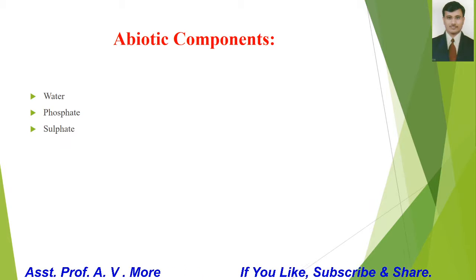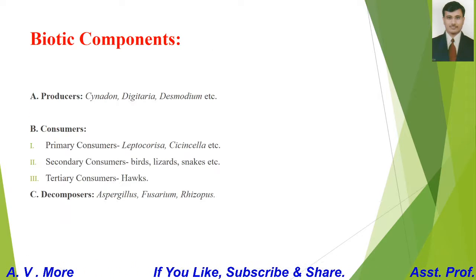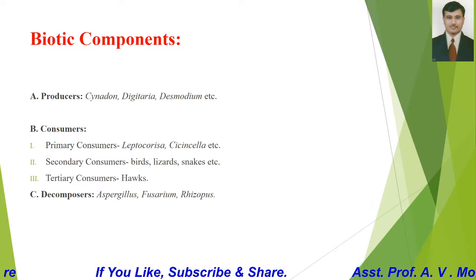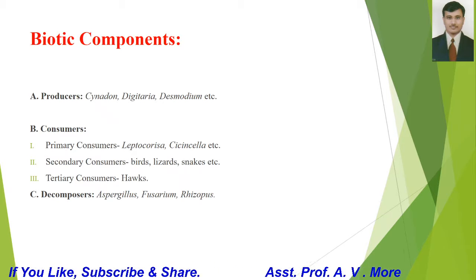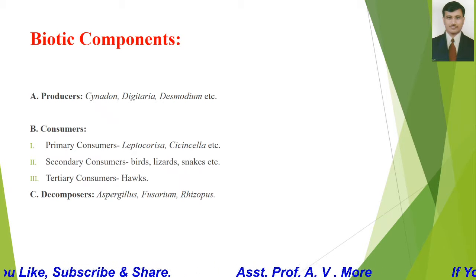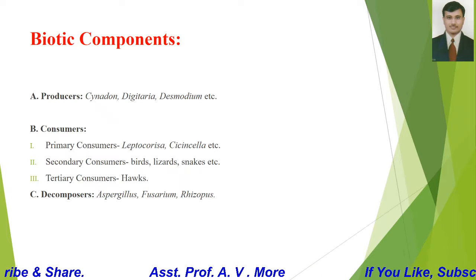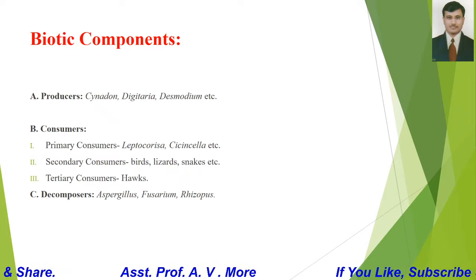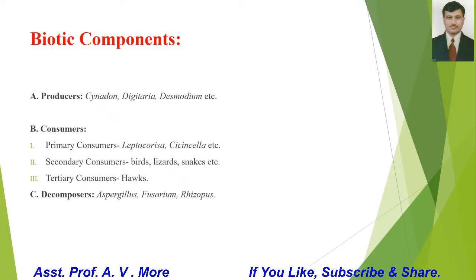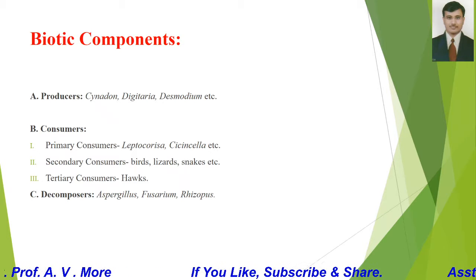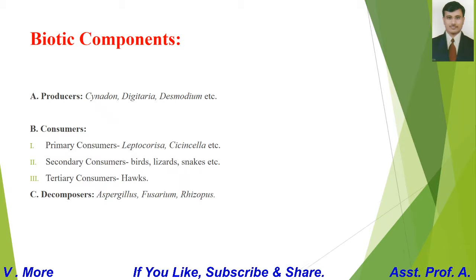The biotic components are again divided into three types: producers, consumers, and decomposers. Producers are mainly grasses and a few herbs. The main grass species include Cynodon, Desmodium, etc.